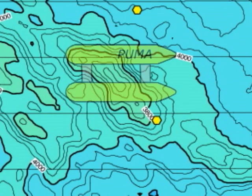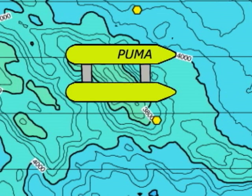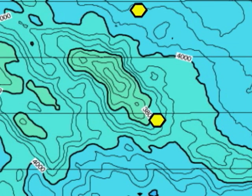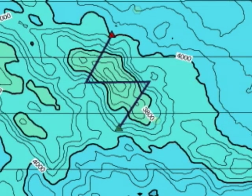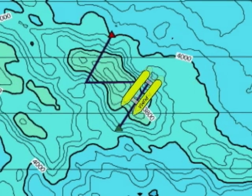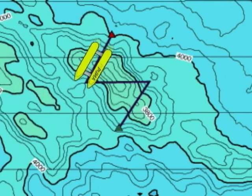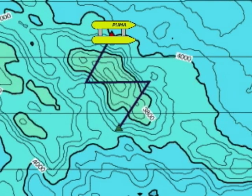Our next step is to send out one of our robotic vehicles called Puma to search for the source of that plume. We deployed two transponders. These are sound beacons that help Puma navigate in the depths. Puma is programmed to swim a zigzag search pattern over the volcano.